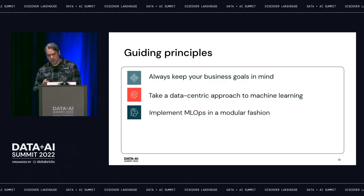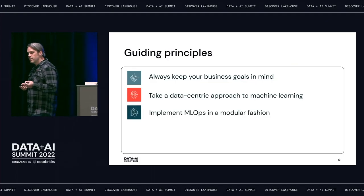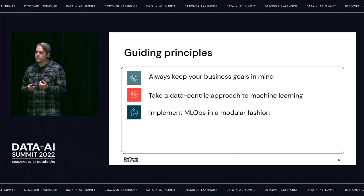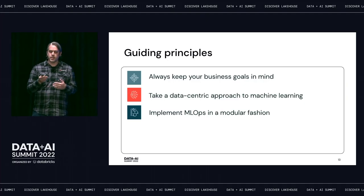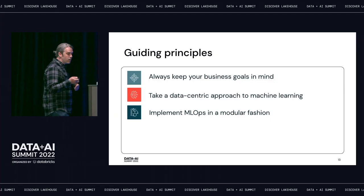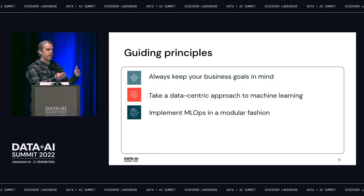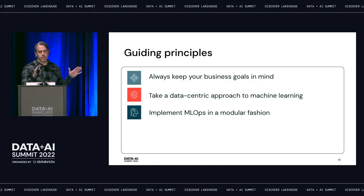Third principle: implement MLOps in a modular fashion. This means both bringing software engineering best practices to your code — implementing it in a modular way that lends itself to unit testing and reusability — but also at the process level, getting together and defining the steps of your process as an organization, the people involved, and having everyone understand and be on the same page.